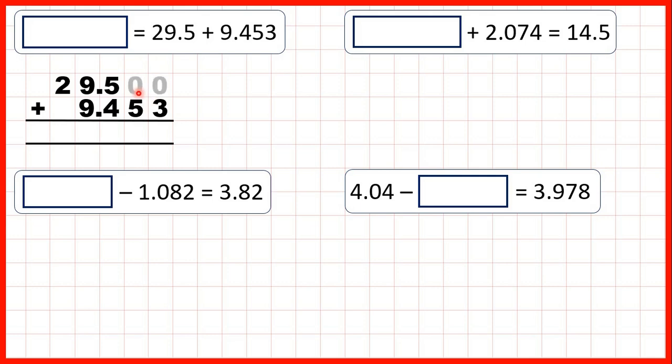Now, we can write zeros in these empty squares, because 29.500 is the same as 29.5. We haven't changed the question, because all these zeros tell us is that we don't have any hundredths or thousandths in 29.5. Now, we need to remember to copy the decimal point down into our answer so that our decimal points are all lined up, and now we can use column addition.